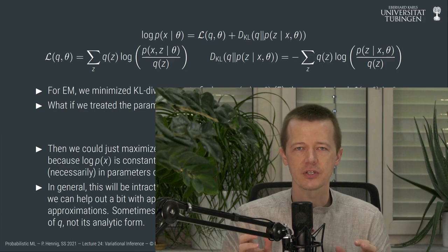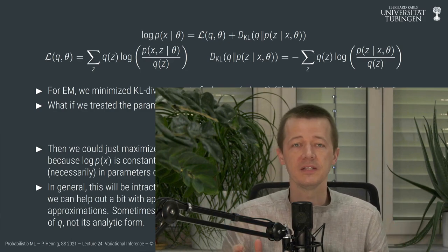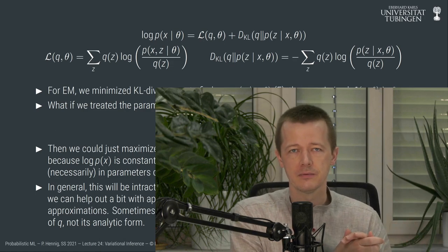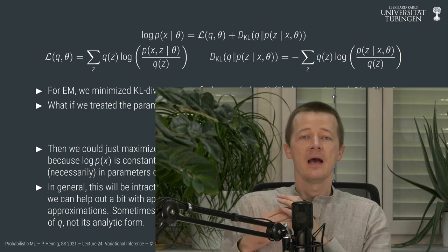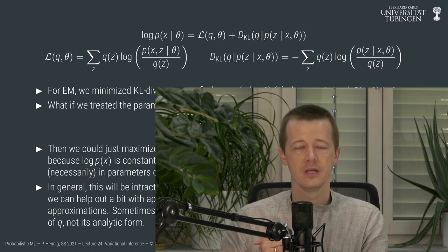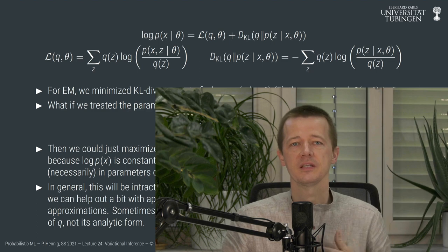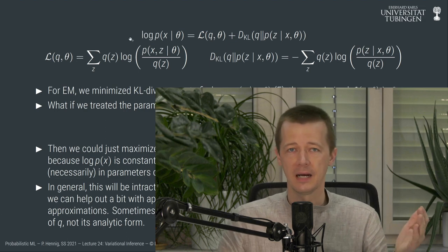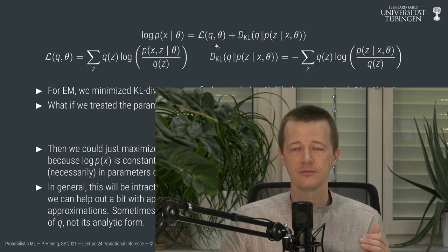Hello and welcome to lecture 24 of probabilistic machine learning. The last two lectures have been focused on a very interesting insight: the relationship between a probability distribution p over any variable x and any other probability distribution q over any other variable z can be described by an equation stating that the log marginal over x can be written as the sum of two terms.